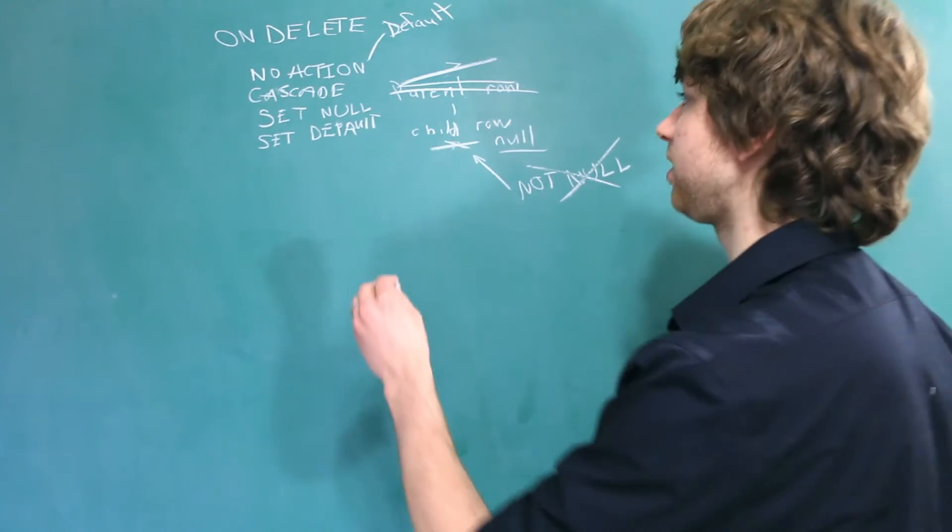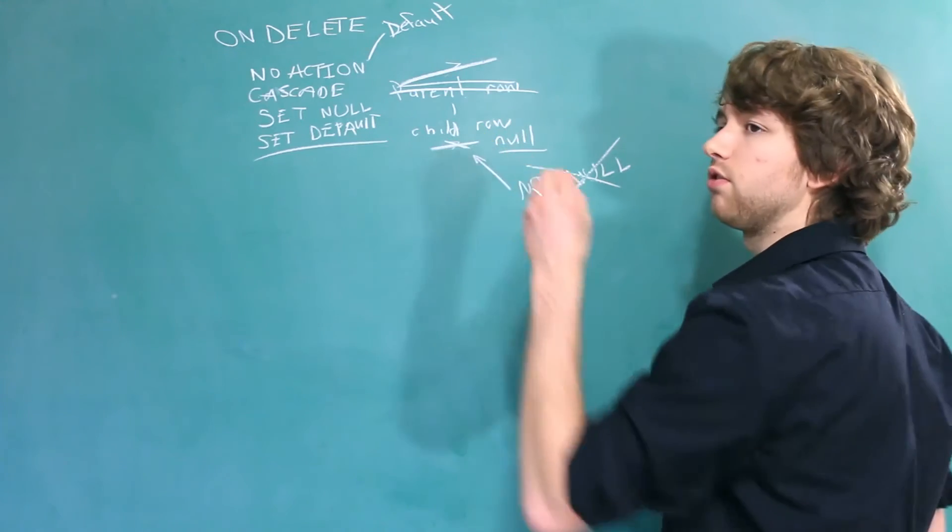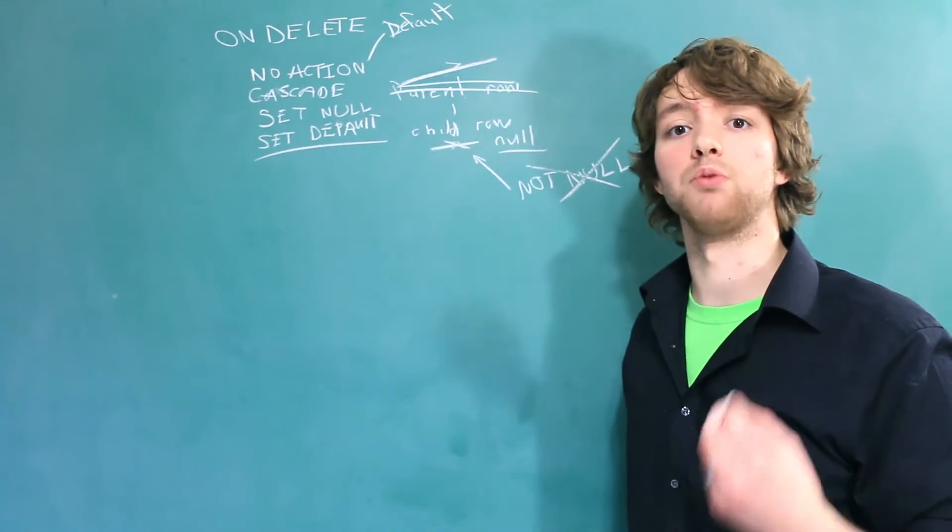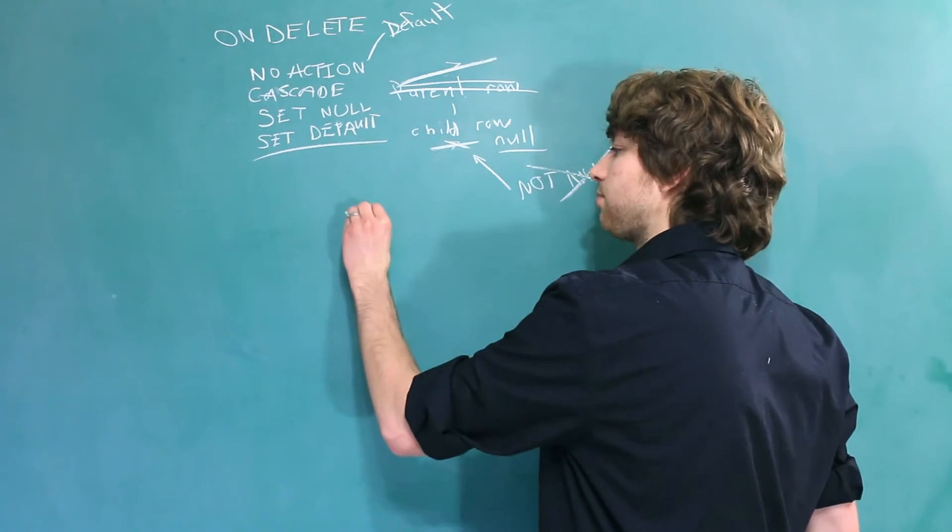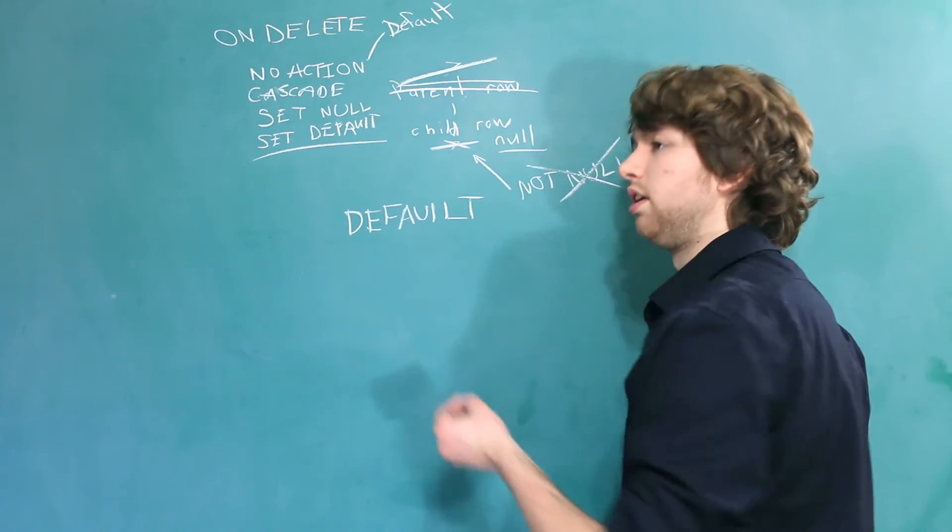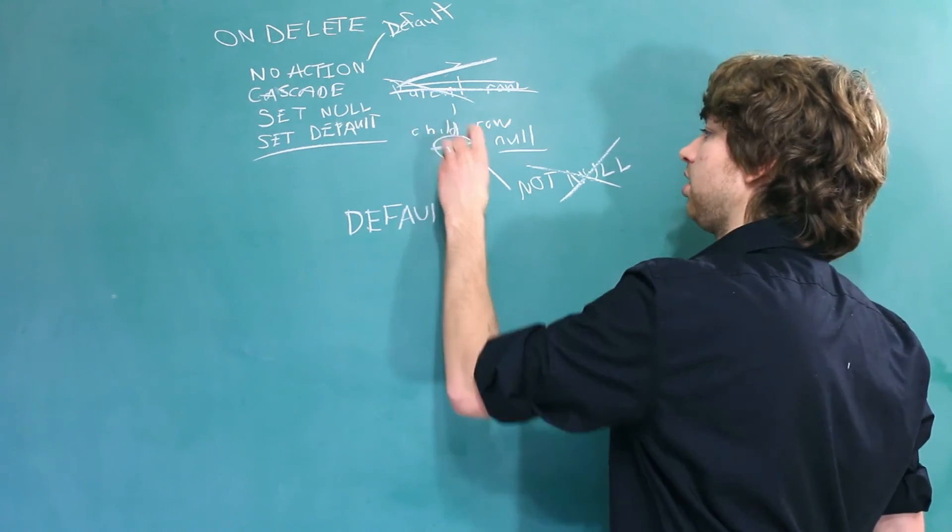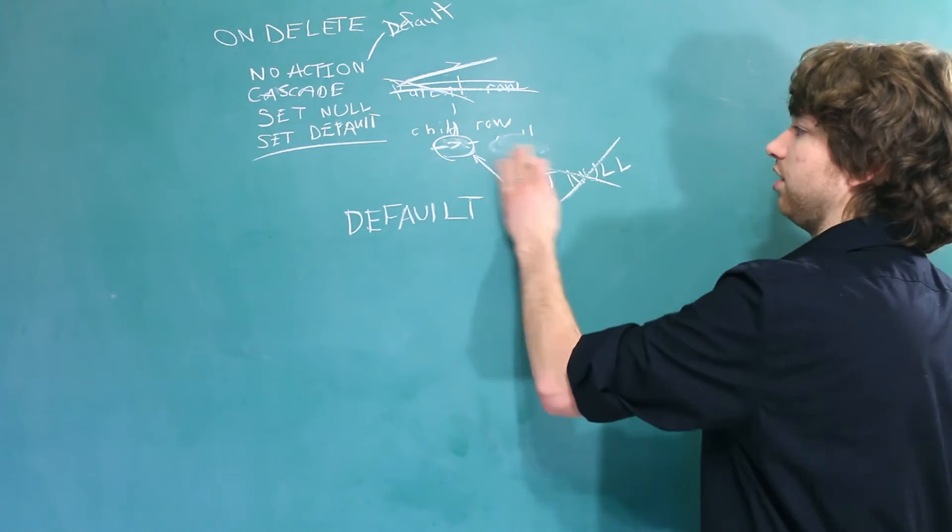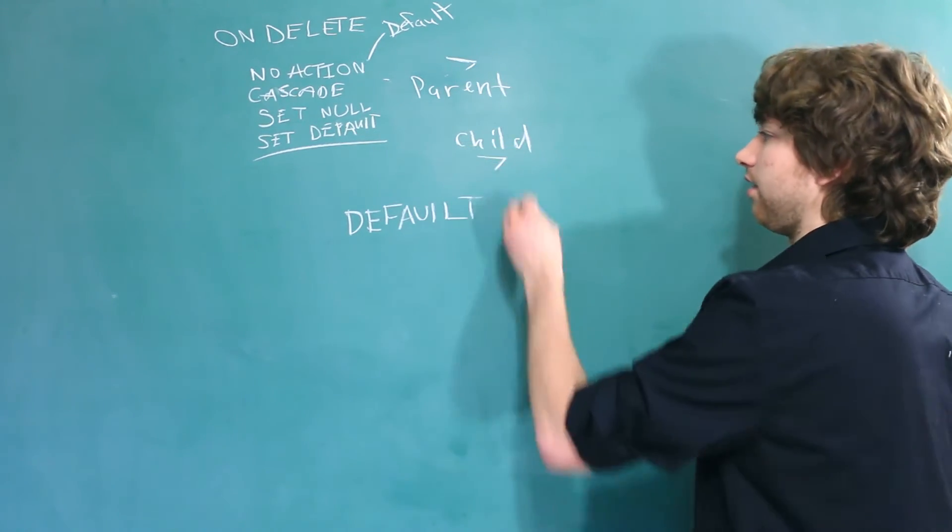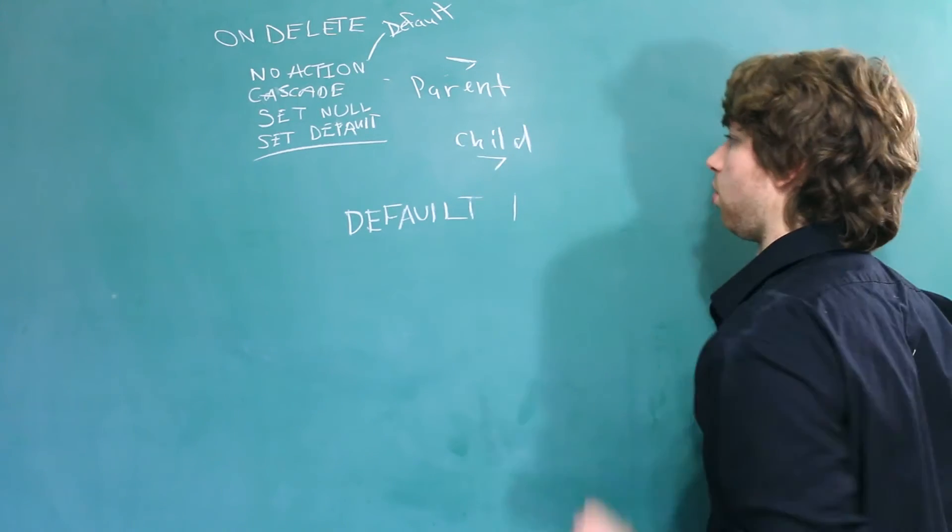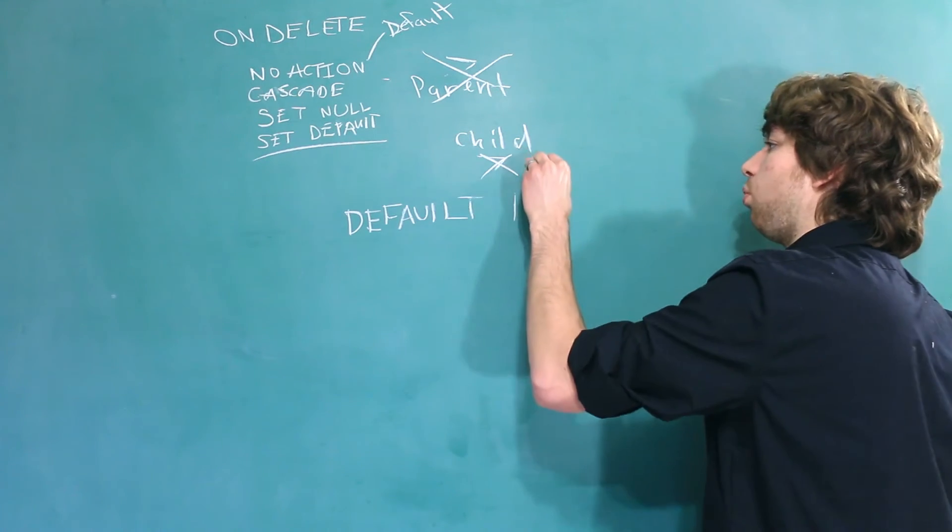If it was labeled NOT NULL, you wouldn't be able to do that, because then you'd try to put a null inside of a NOT NULL column, and that's just going to make your database explode. Finally we have SET DEFAULT, and what that is going to do is set the column to whatever the default value is for that column. When you define the column, you can use the default attribute and give it a value. And then when you delete the parent, that value of like originally it was 7 will be replaced with whatever the default is.